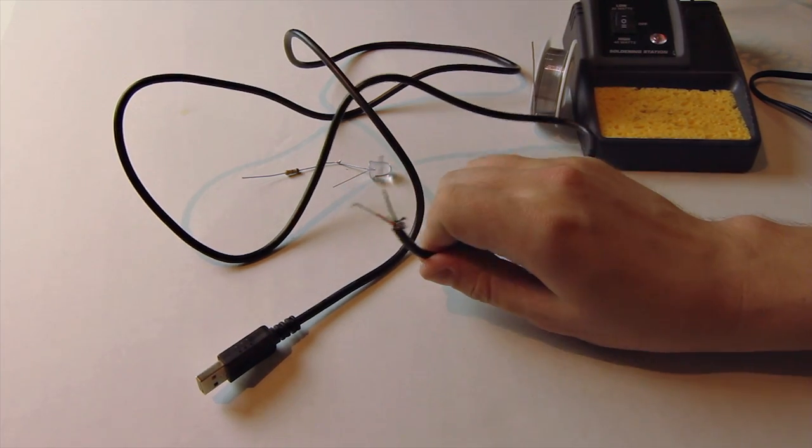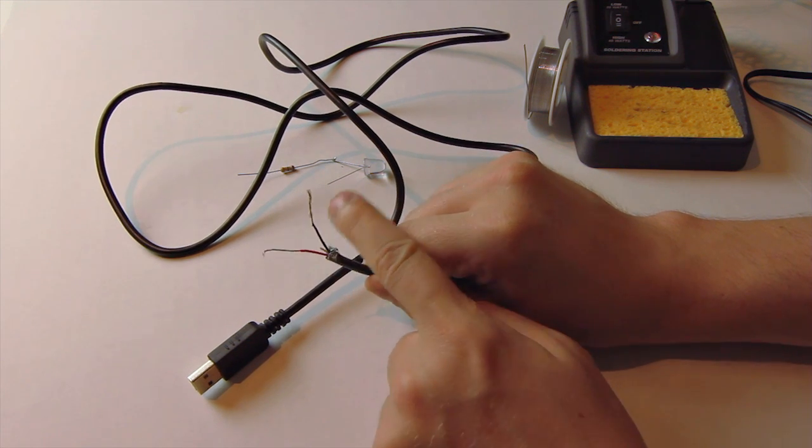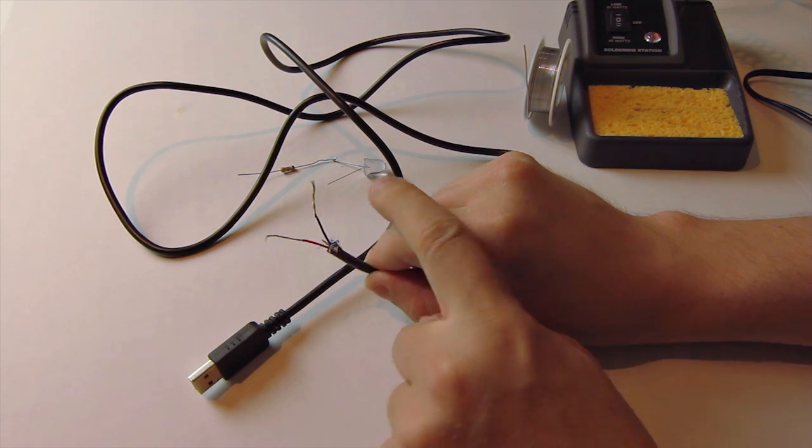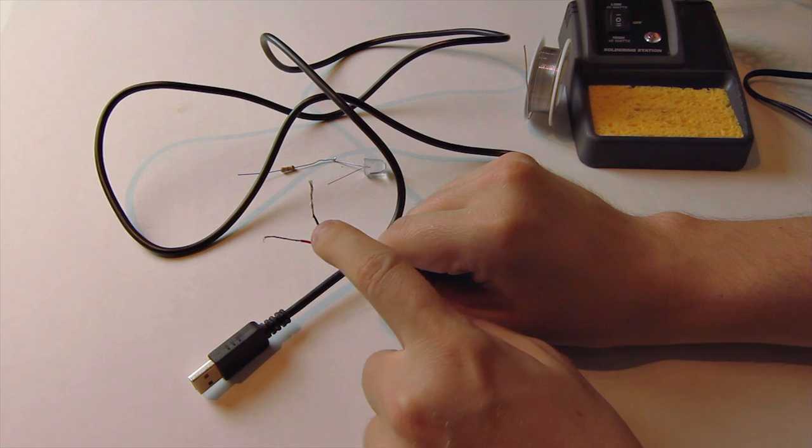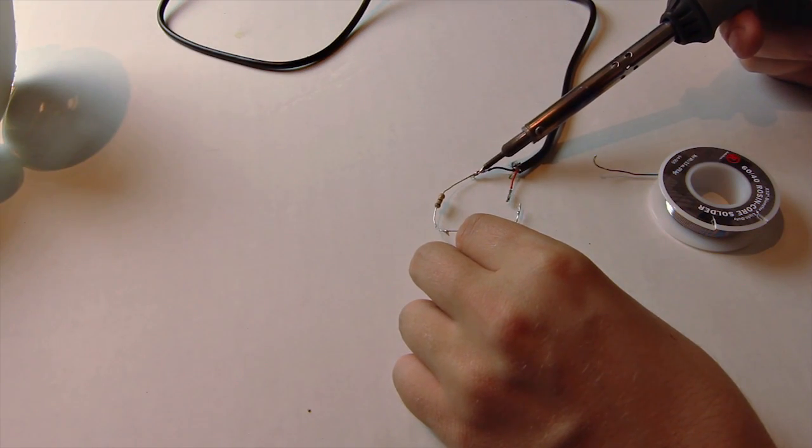And finally, the USB cable. If you have any broken devices that have a USB cable, go ahead and grab it, cut it up, and get these two wires to pop out. There's always going to be four inside, but you don't need the middle two as they're only for data.